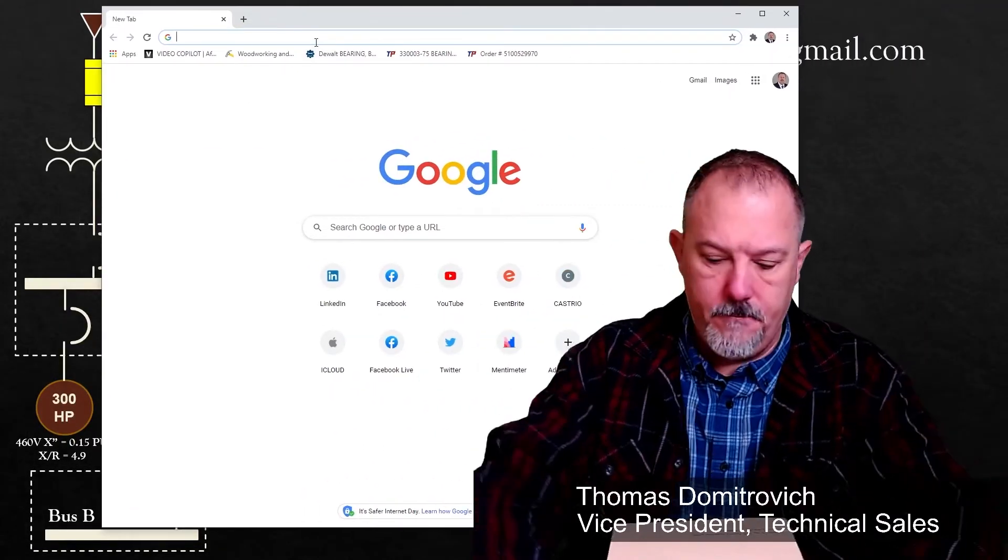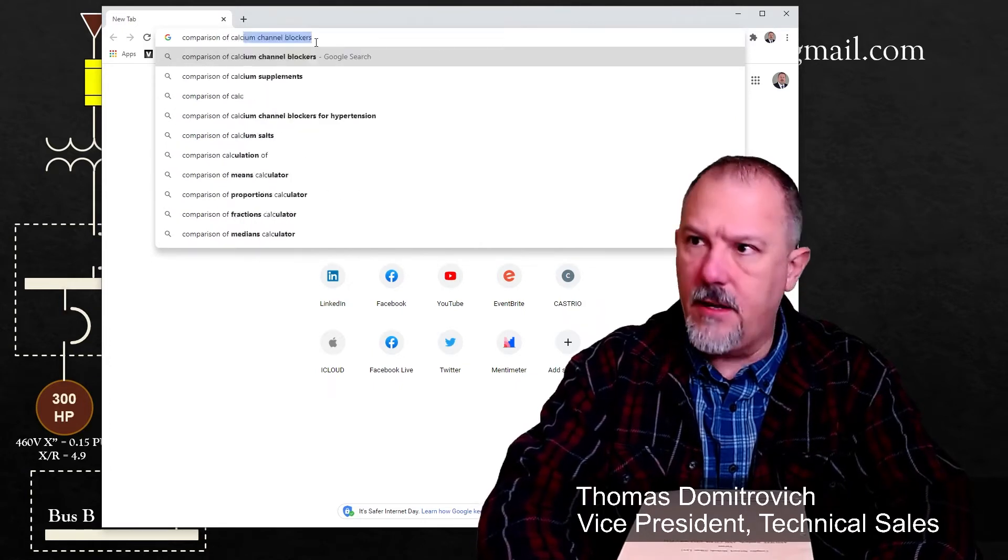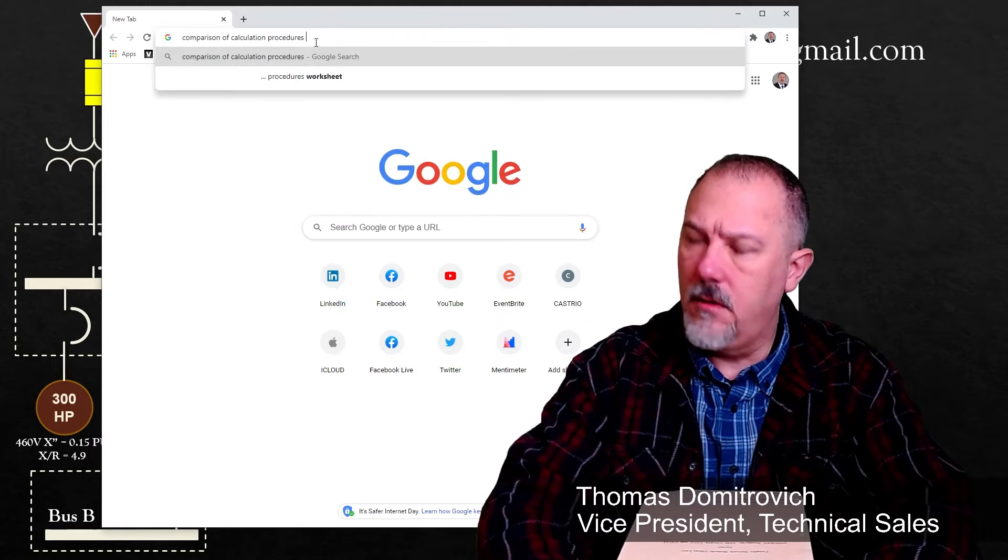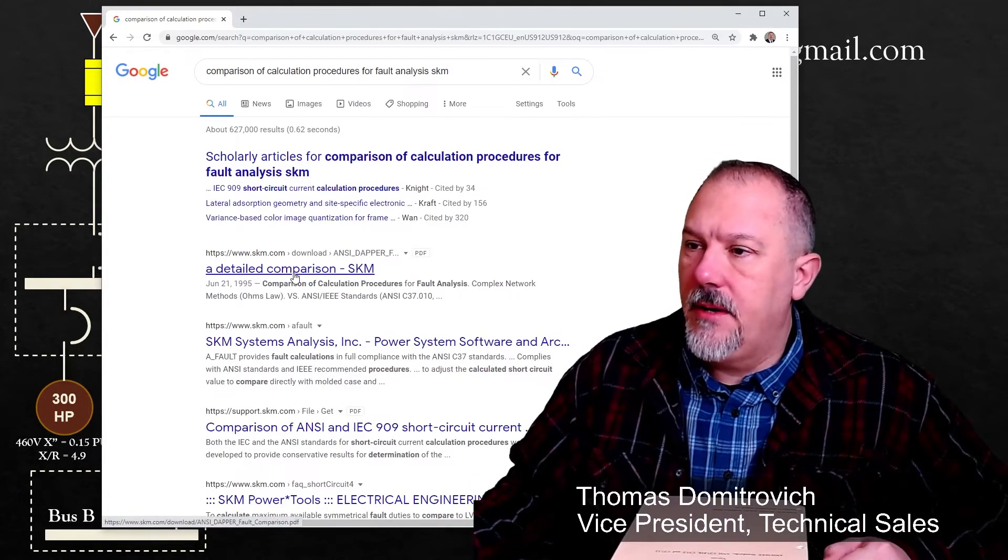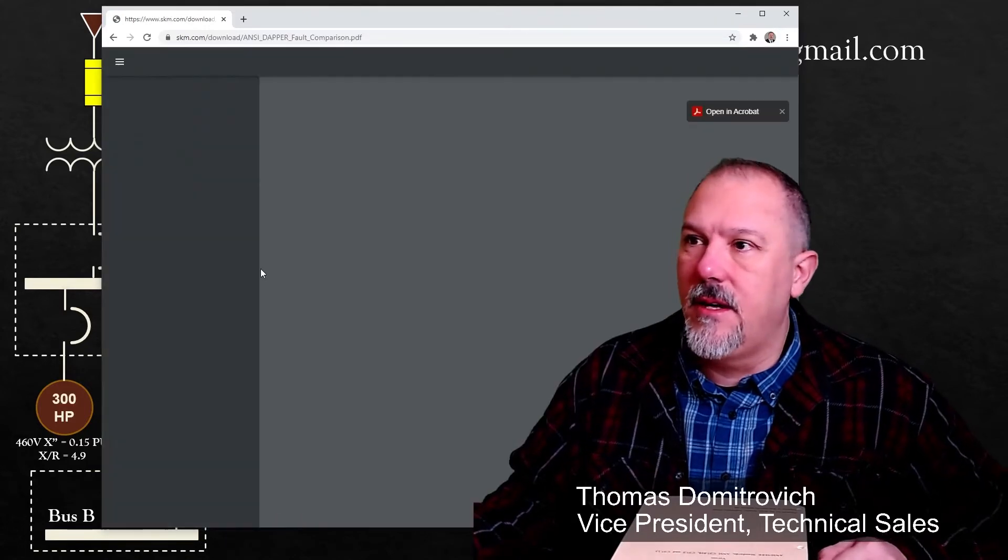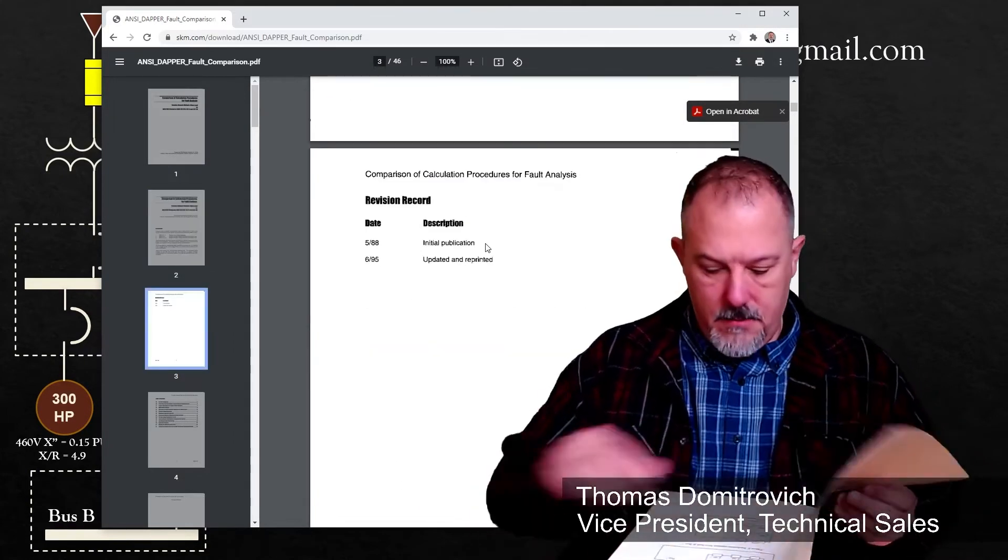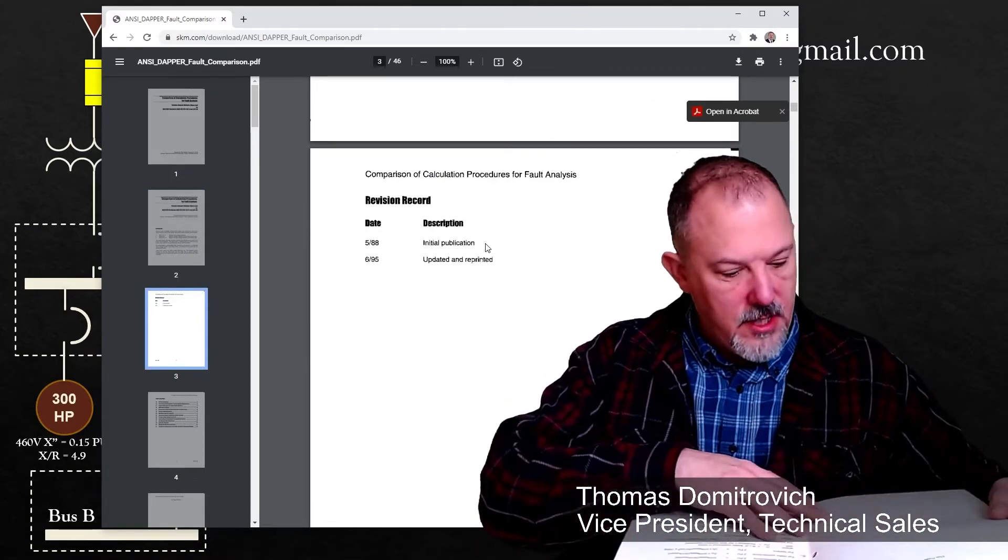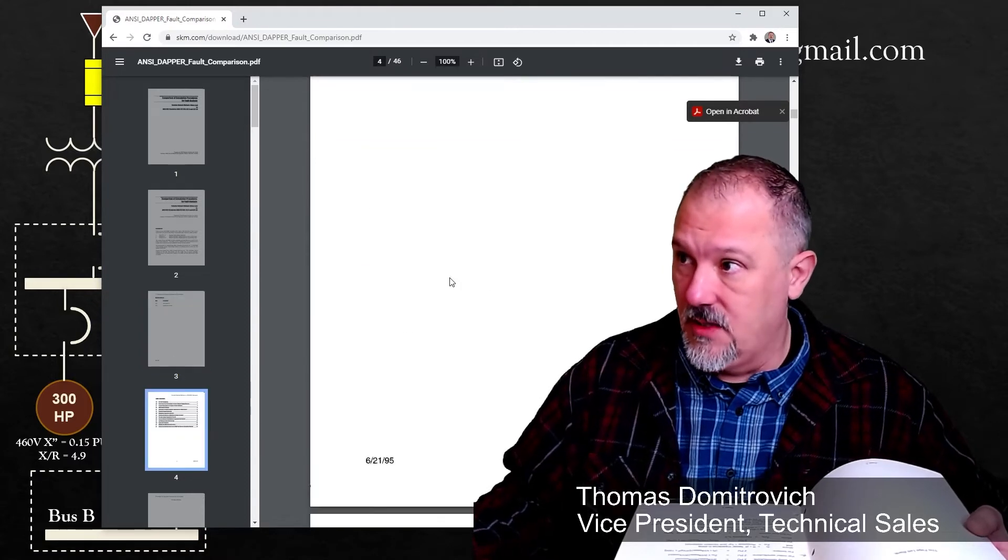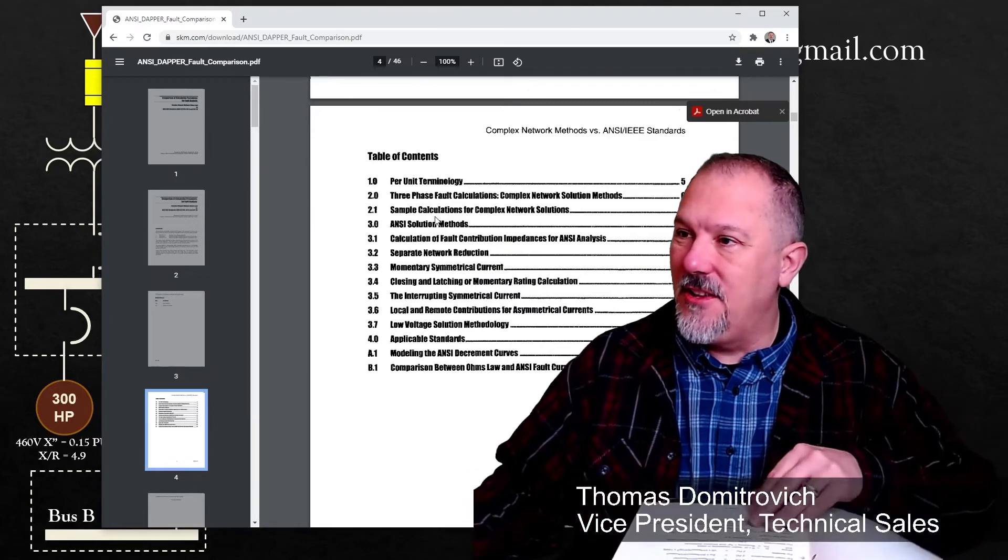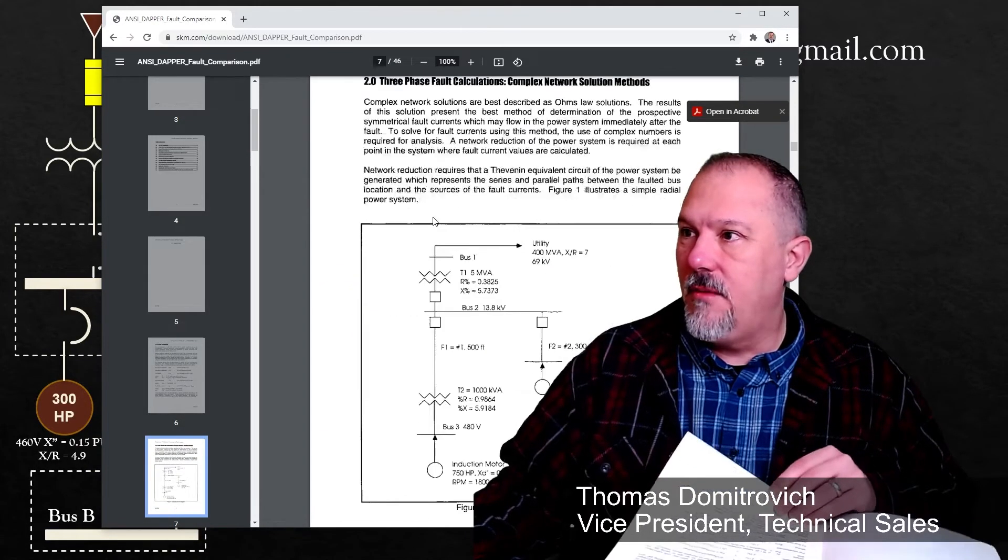The subtitle is Complex Network Methods Ohm's Law versus ANSI IEEE Standards, ANSI C37.010, C37.5 and C37.13. And it was prepared for the IEEE Industry Application Society by SKM Systems Analysis. He goes over per unit in here. I've not Googled this before so let's Google it together. The title is Comparison of Calculation Procedures for Fault Analysis SKM. We'll see what we get. A detailed comparison SKM 1995. Let's click on it. There we go. Look at this. It's a revision. I got the introduction. See mine's older. There's a 5/88 and a 6/95 updated and reprinted. Per unit technology terminology. There it is. And there's your equations. Look at that. Three phase fault calculations.